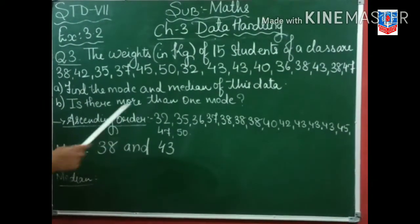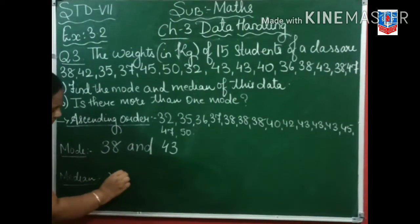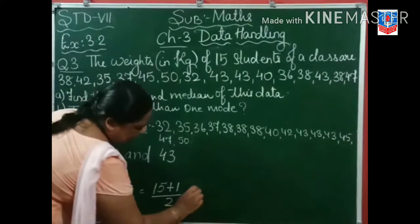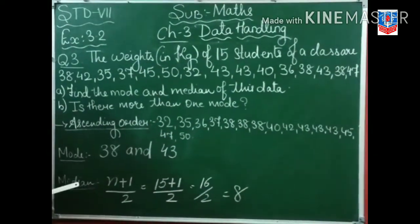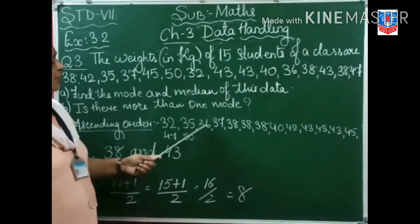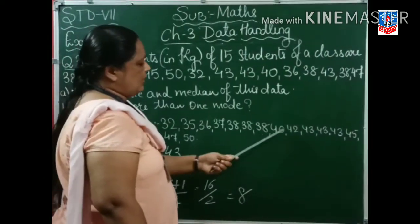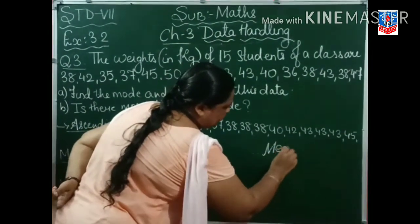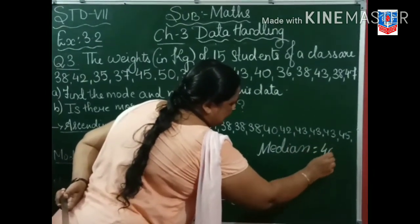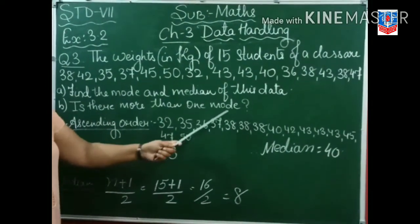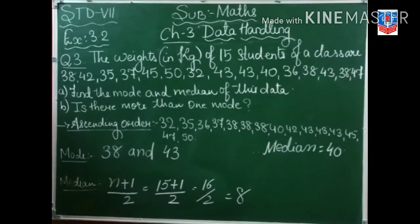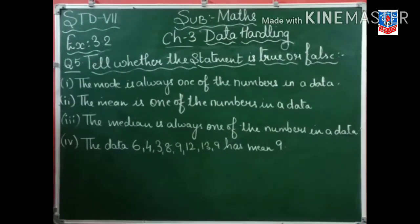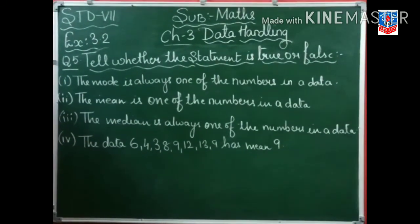Now, median. There are 15 observations. So n plus 1 by 2 equals 15 plus 1 by 2 equals 16 by 2 equals 8. The 8th observation is the median. Counting: 1, 2, 3, 4, 5, 6, 7, 8 — so median is equal to 40. Is there more than one mode? Yes — there are two modes: 38 and 43. Question number 5, true or false, is your homework.